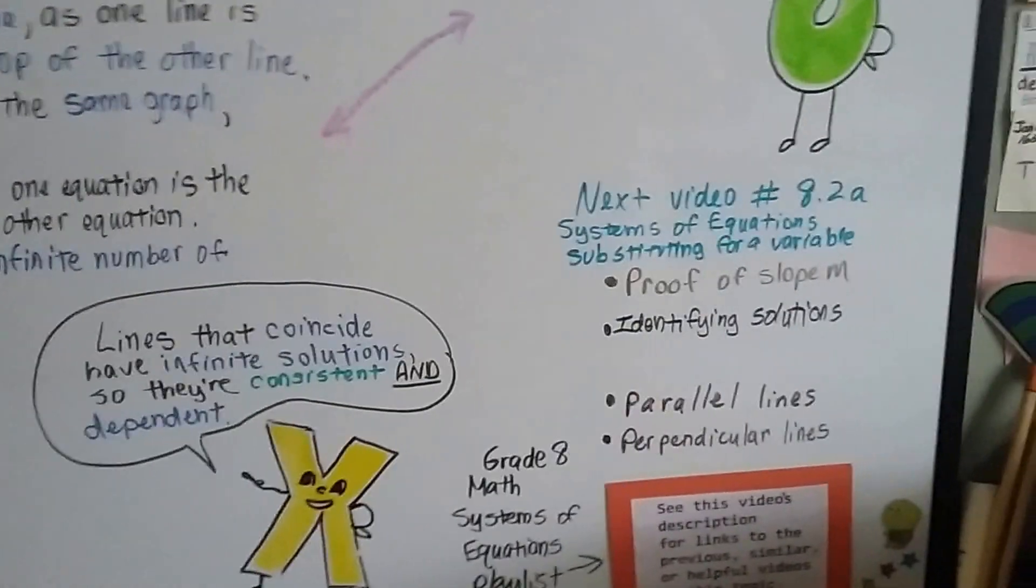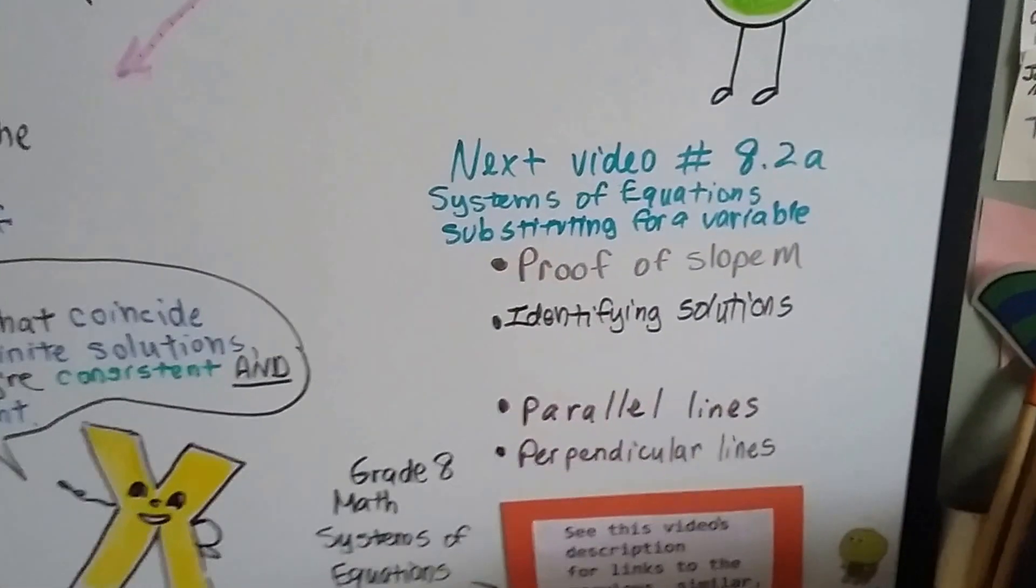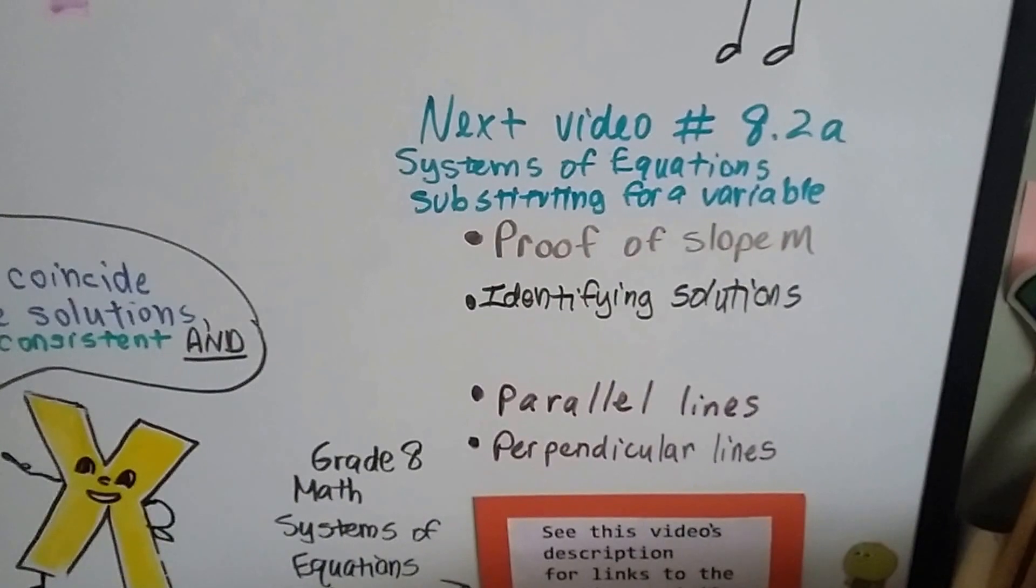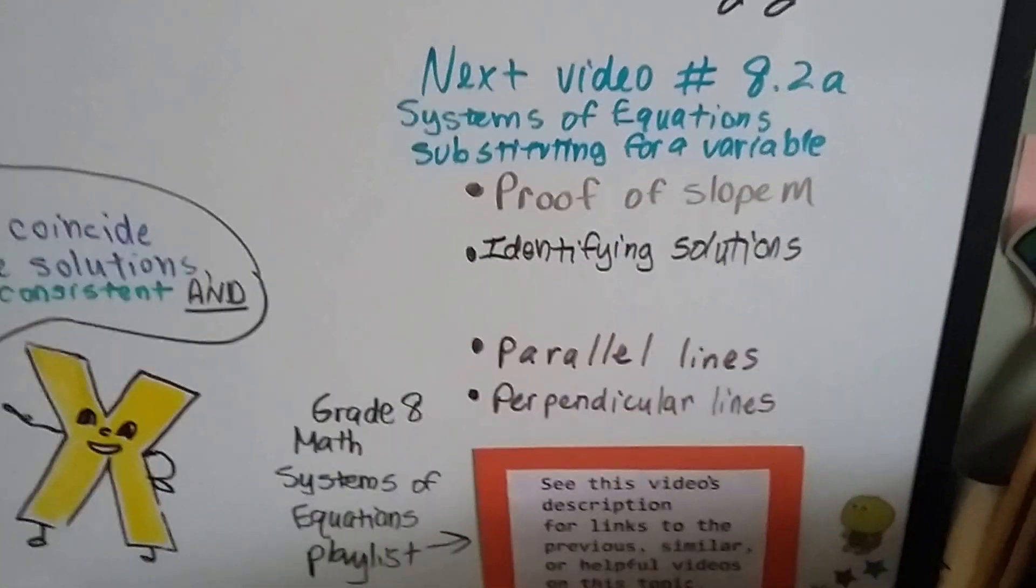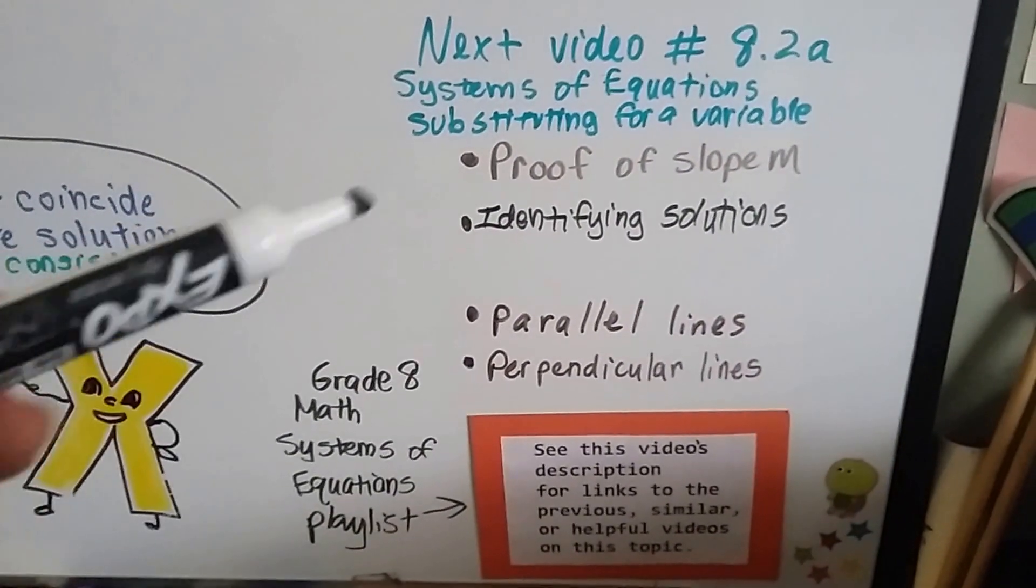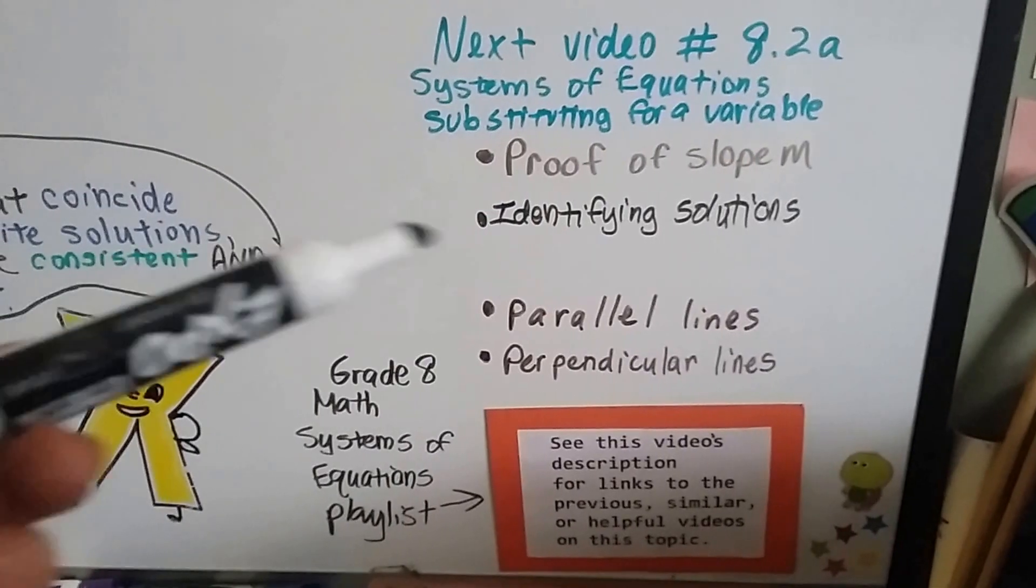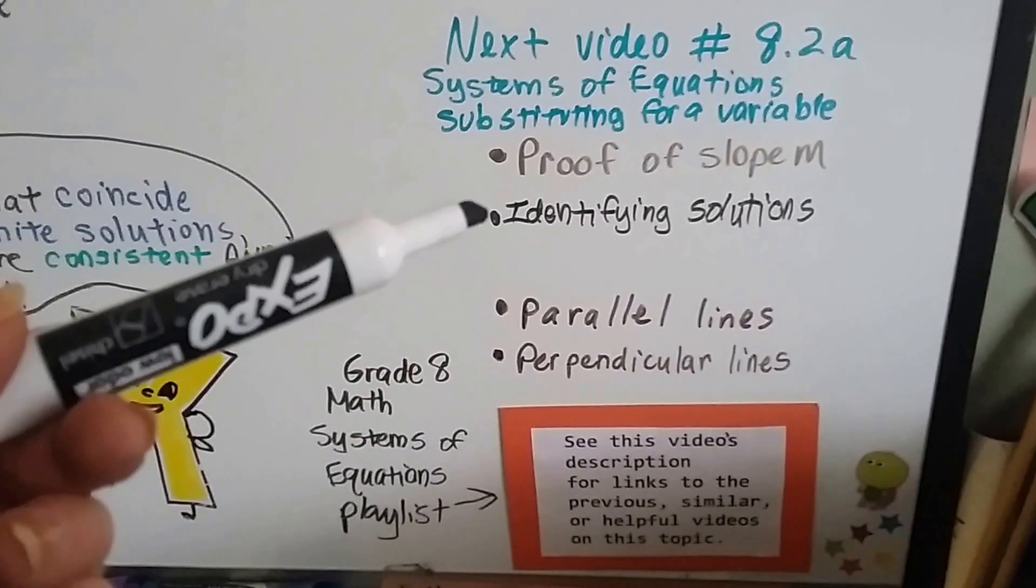Now, our next video is going to be 8.2a. We're going to talk more about systems of equations. We're going to talk about substituting for a variable. And if you want to get a link to the proof of slope m or identifying solutions, this was our previous video, 8.1a.